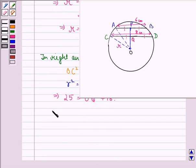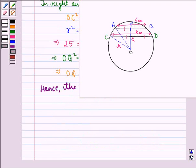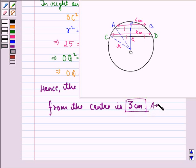This implies that OQ square is equal to 9, and this implies that OQ is equal to 3. Hence, the distance of the chord from the center is 3 cm. So this is our answer to the question. I hope that you understood the question and enjoyed the session. Have a good day.